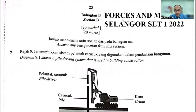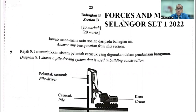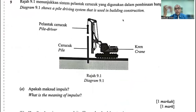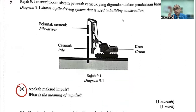Hi everyone, we're going to begin our series on the ultimate resource guide for the last bit of your preparation. This series of videos is going to be by topic. We're going to do the forces and motion questions in this video first. Diagram 9.1 shows a pile driving system used in building construction. The first question usually sets the tone for the subtopic — if it's about impulse, you need to think about momentum, impulsive force, and time of impact.